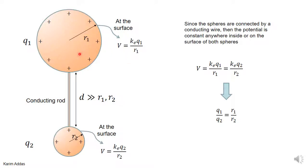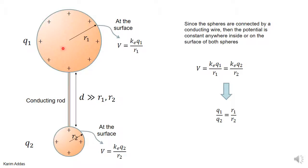The key to solving this problem is the electric potential. Since the two conductors are so far apart, we can consider the charge to be uniformly distributed on each conductor independently. For a conducting sphere, we've shown that the potential at the surface is kq over the radius r.